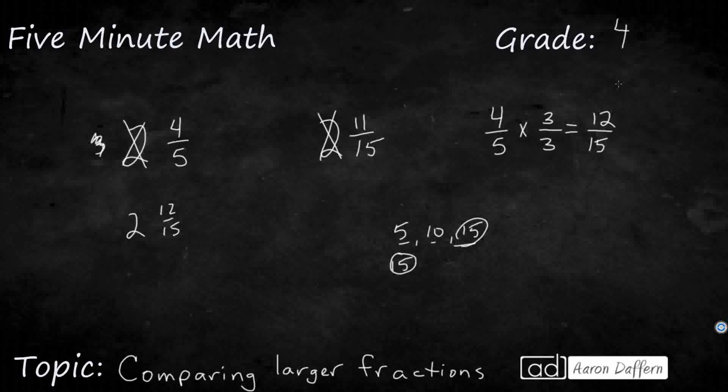Two and twelve fifteenths actually, and that's going to be two and eleven fifteenths. Now we can compare. The whole number is the same. Which one is going to be larger? Well, the twelve fifteenths is larger than eleven fifteenths. So sometimes it's going to be as simple as that.